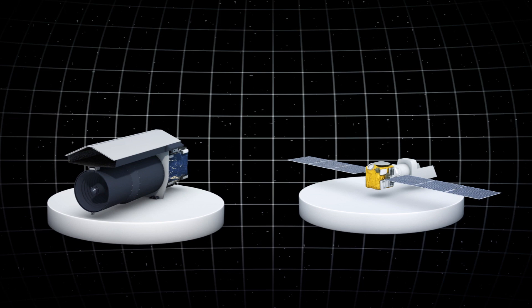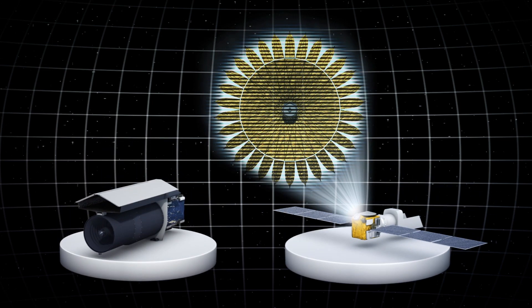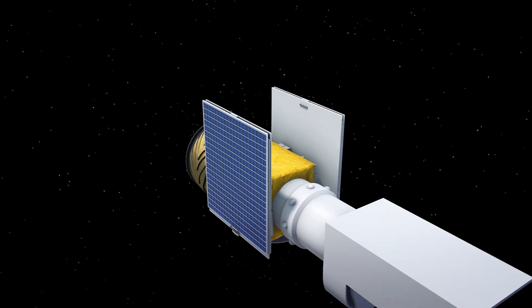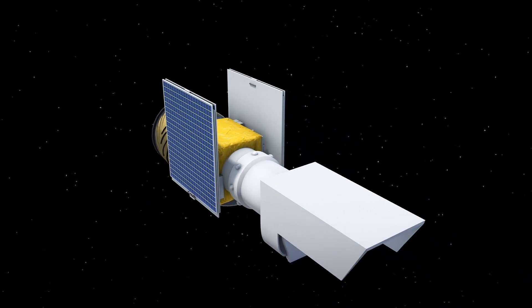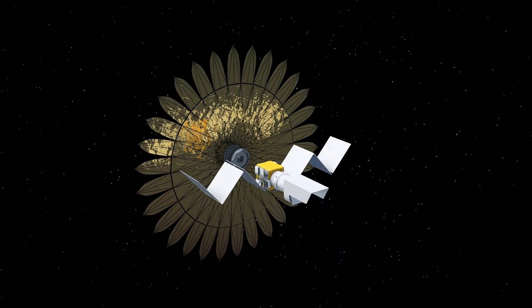One would be a space telescope that would look for planets, while the other probe would be carrying the starshade. NASA said the starshade technology would be used to block starlight. This would allow the telescope to get a clear view of any new orbiting planets in space.